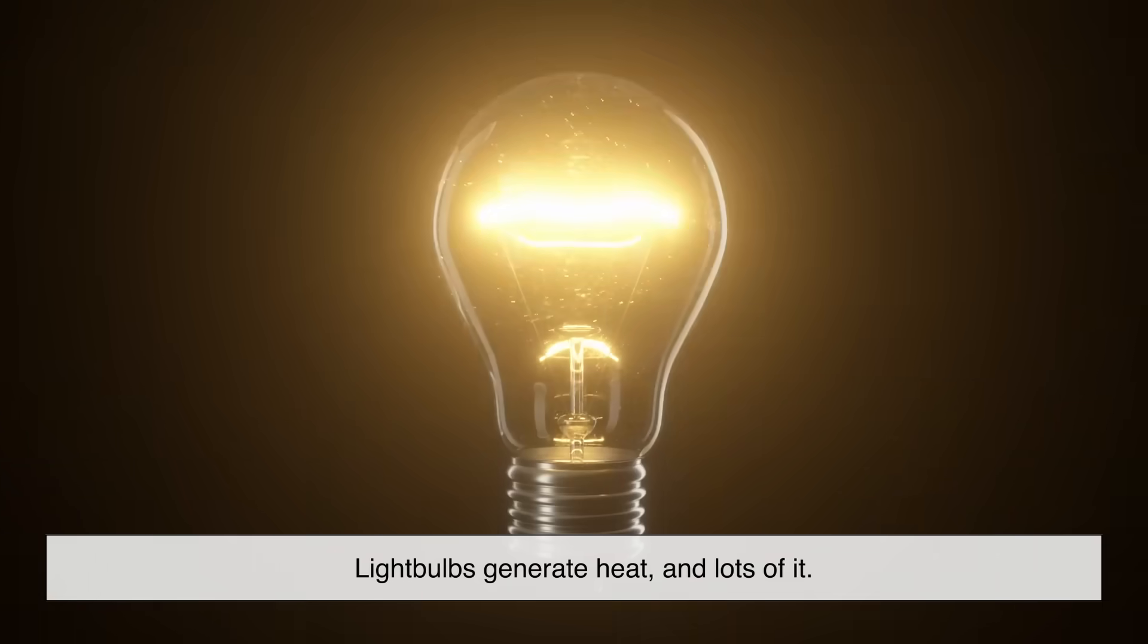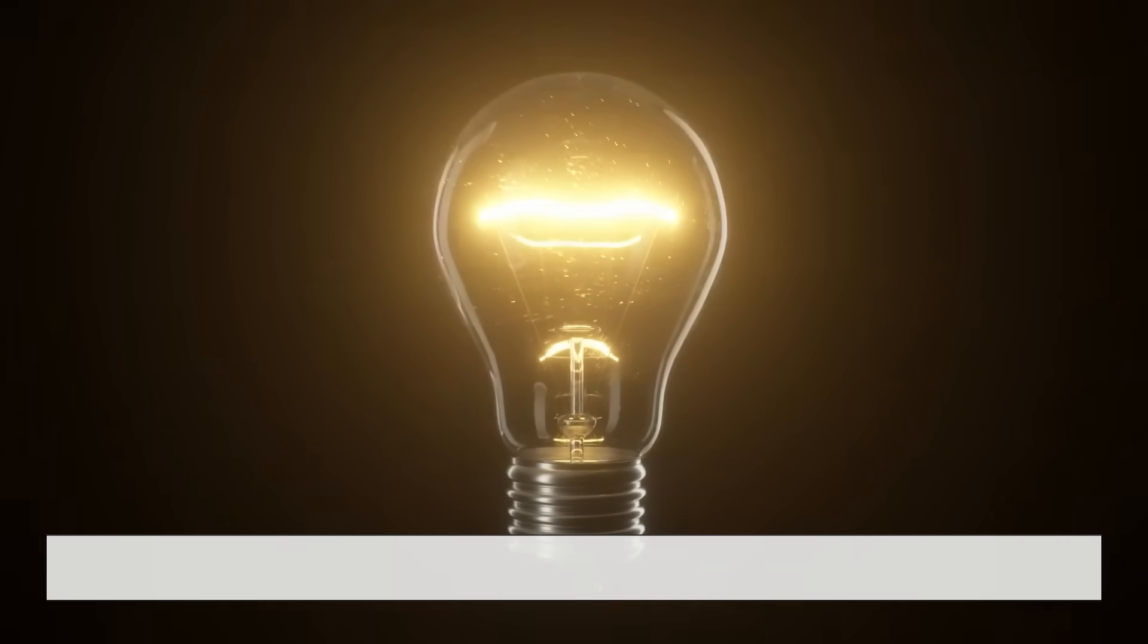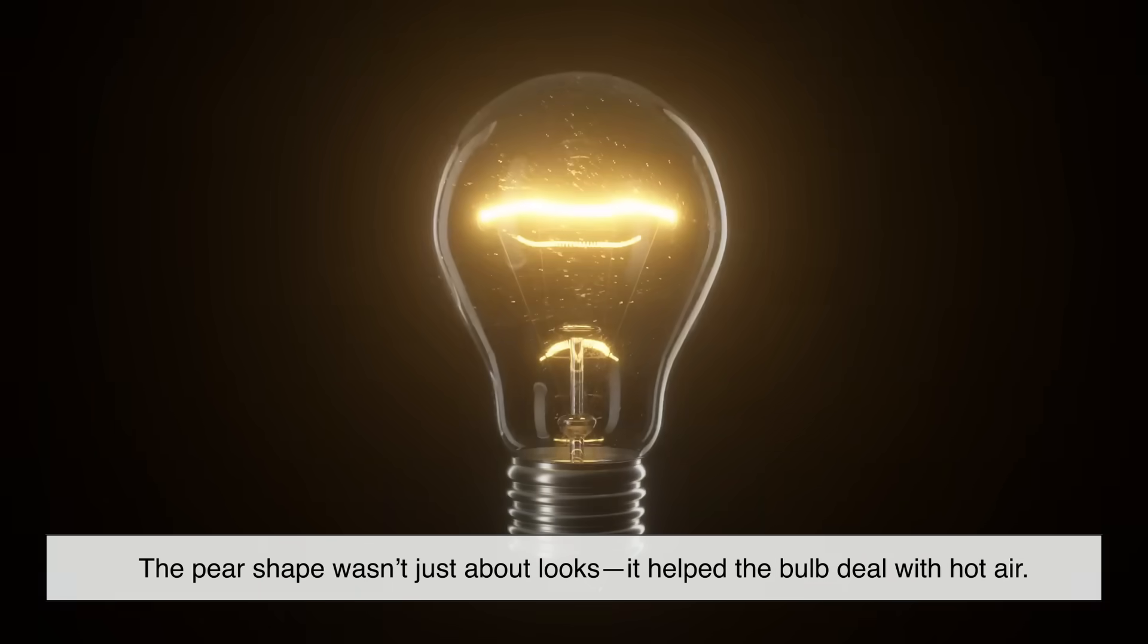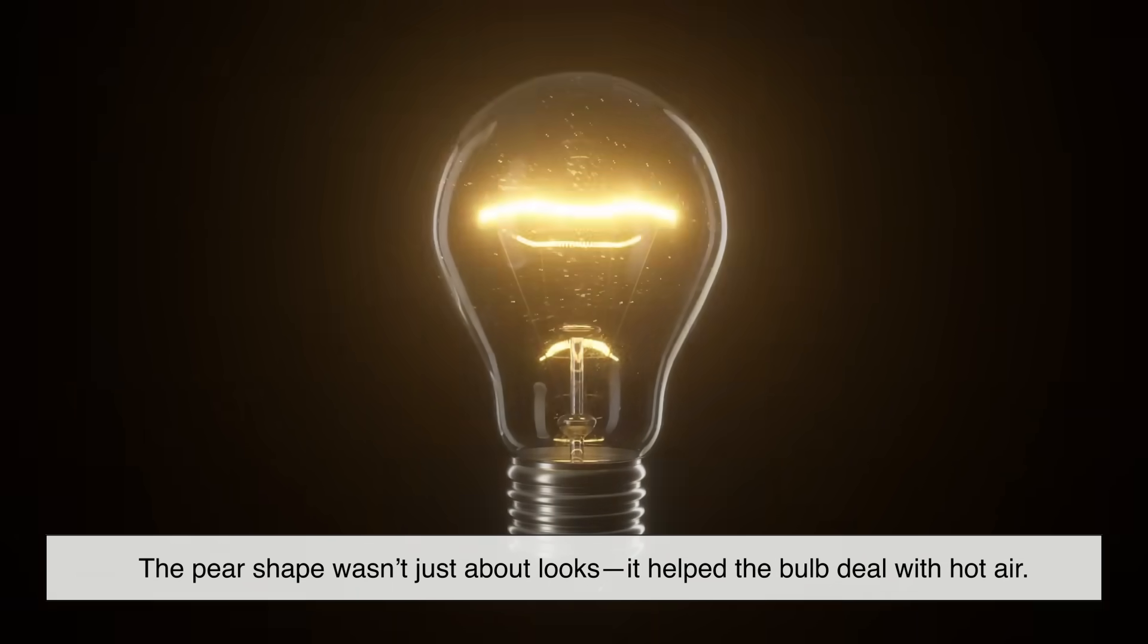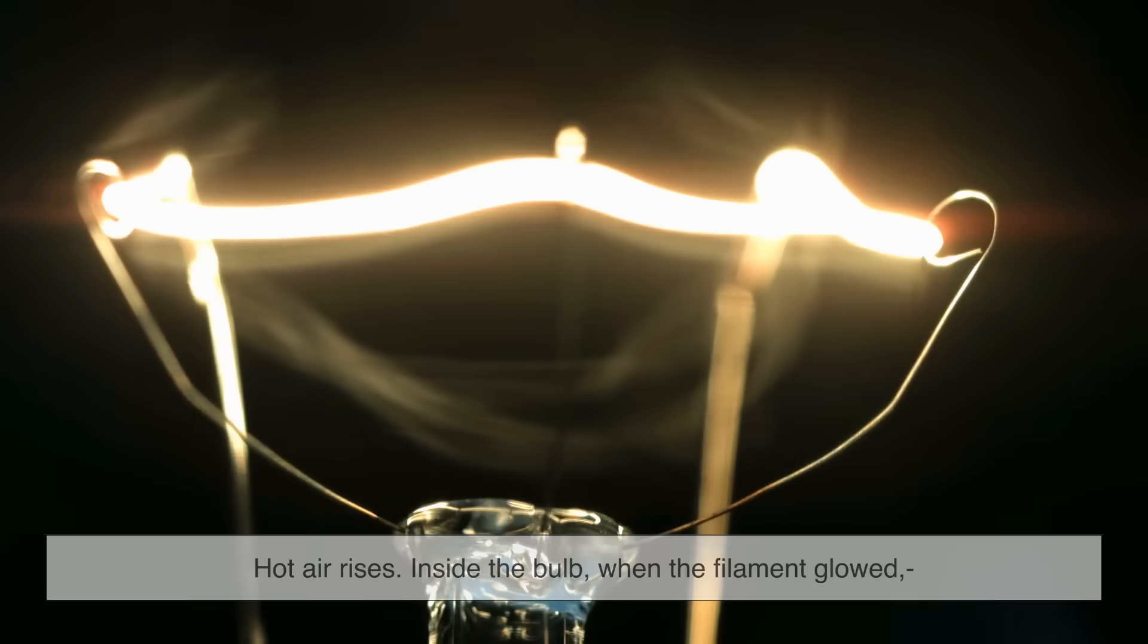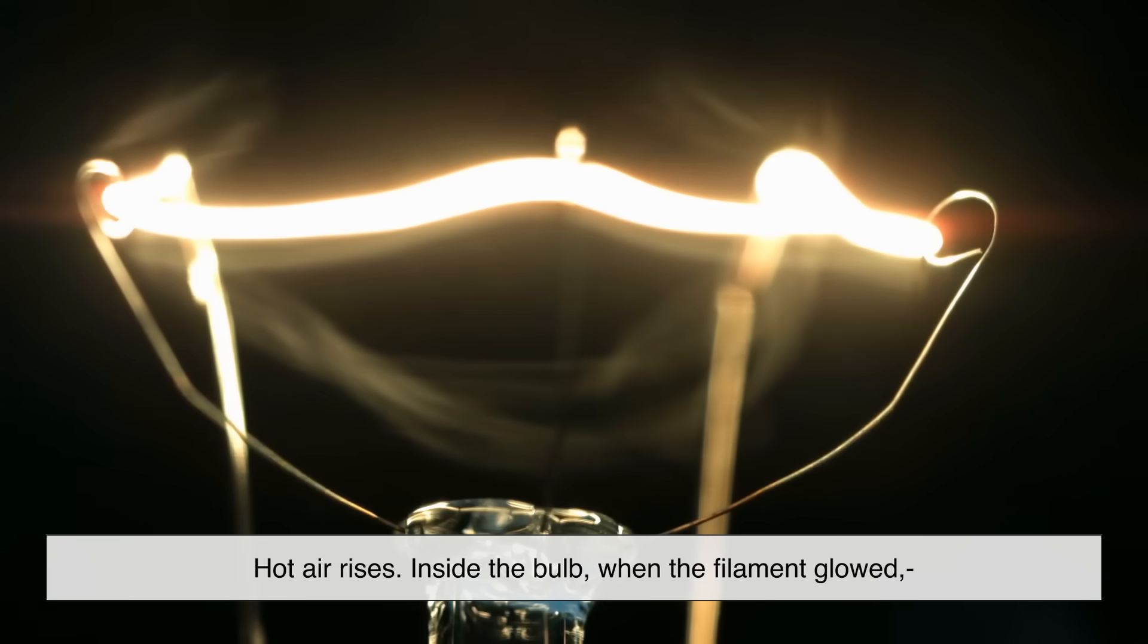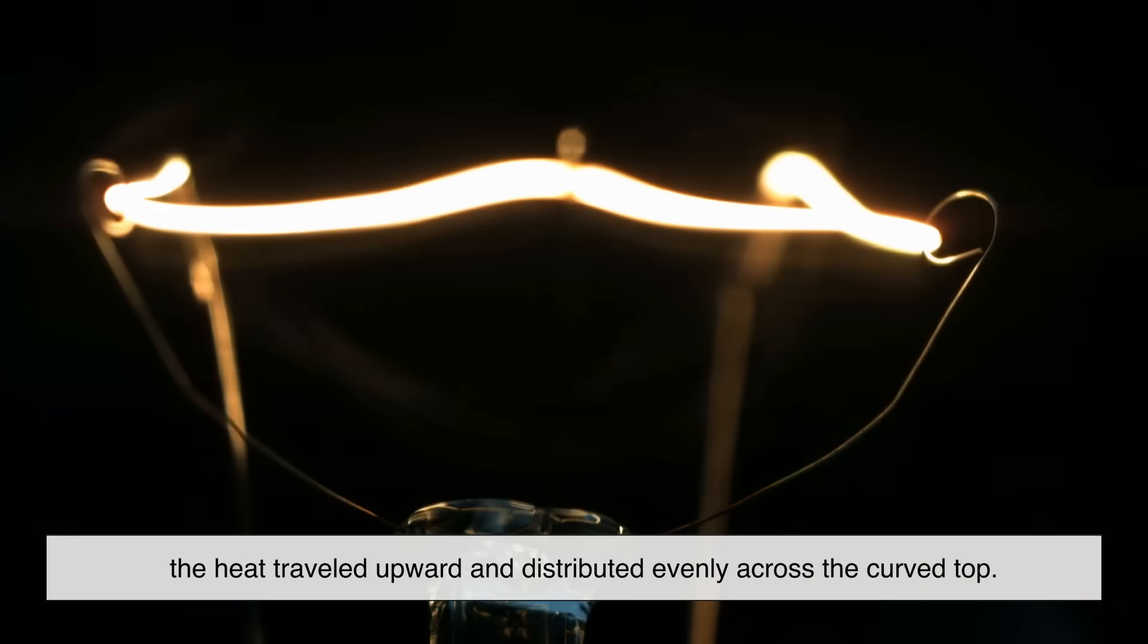Light bulbs generate heat, and lots of it. The pear shape wasn't just about looks. It helped the bulb deal with hot air. Here's why: hot air rises. Inside the bulb, when the filament glowed, the heat traveled upward and distributed evenly across the curved top.